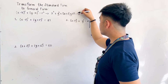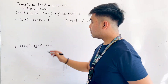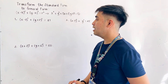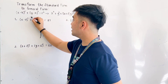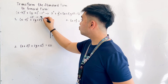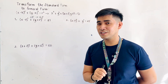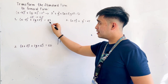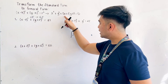We are now given example number one: (x minus 1) squared plus (y plus 5) squared equals 81. This is in standard form, and we need to convert it into general form. Let us first analyze — we have a binomial raised to a square, so we need to expand.